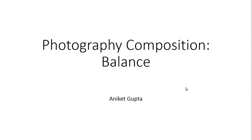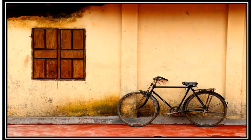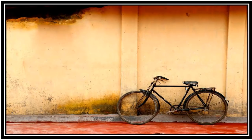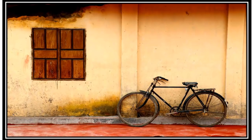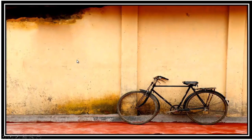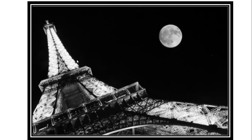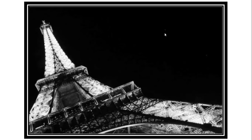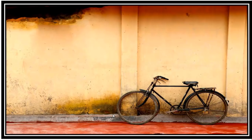One such composition element is balance. For example, here is a simple photograph — compare this photograph with this one. This is the same photograph, but if I remove the window using Photoshop, the photograph that only has a bicycle and no window doesn't look as beautiful. Similarly, here is an Eiffel Tower with a moon — if I remove the moon using Photoshop, the image of just the Eiffel Tower doesn't look good. It feels off balance.